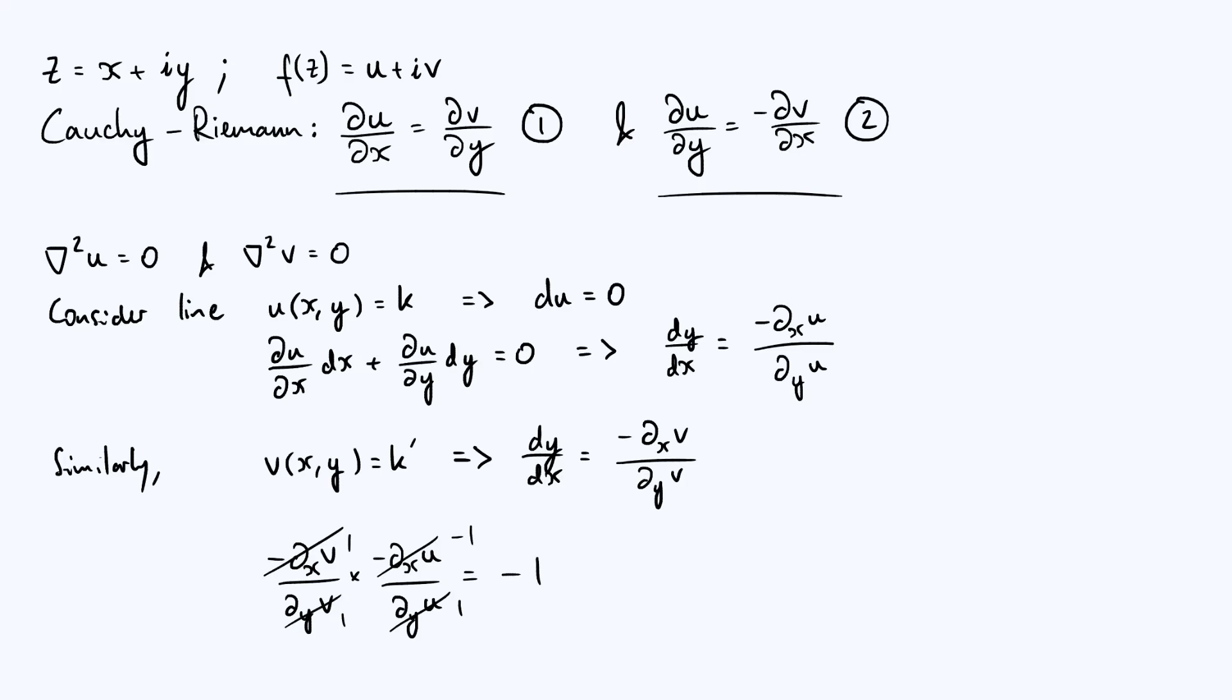Now, of course, if you have two lines or curves and you multiply the gradients together and you get minus one, then that implies that the lines or curves are perpendicular to each other. And so we've just shown that curves of constant u and curves of constant v form two orthogonal sets of curves, because the product of gradients is minus one, completely independent of where in the complex plane we are, and we get minus one regardless of the value of x or y.